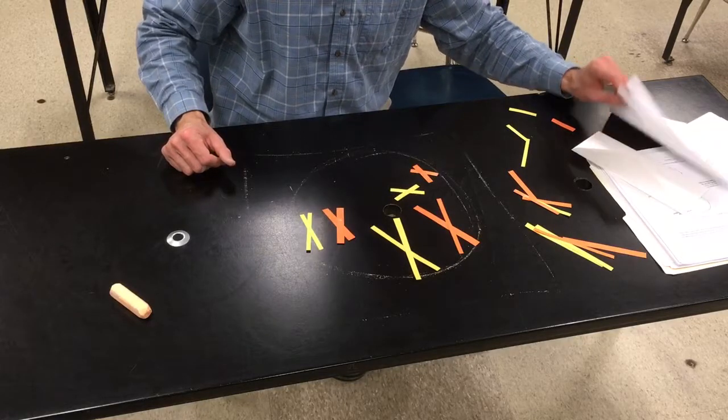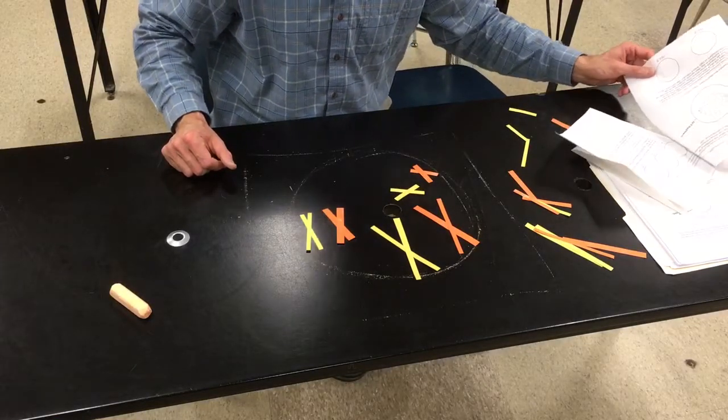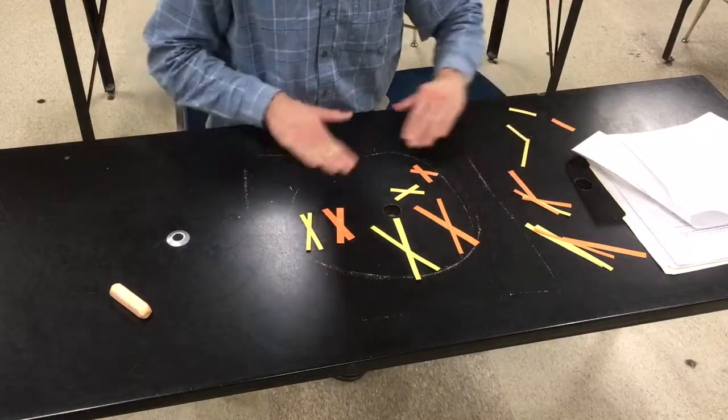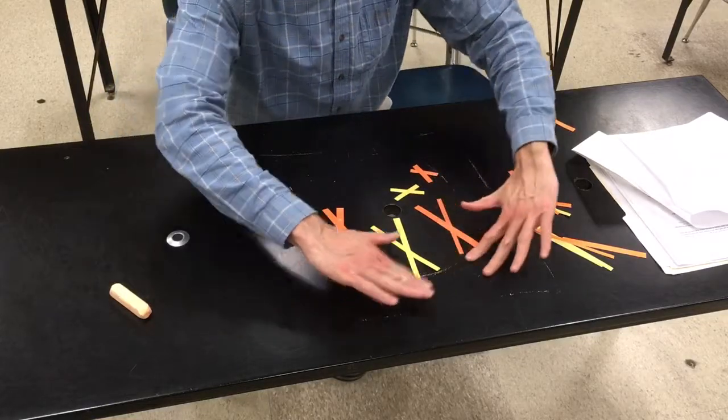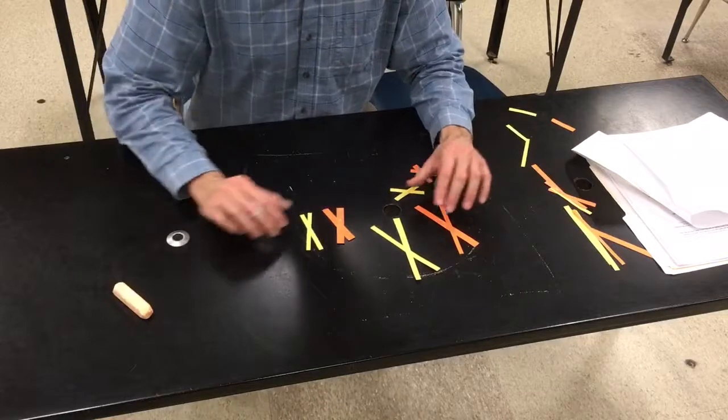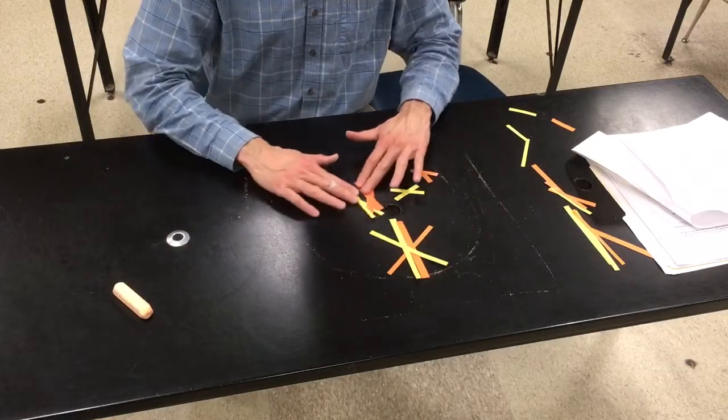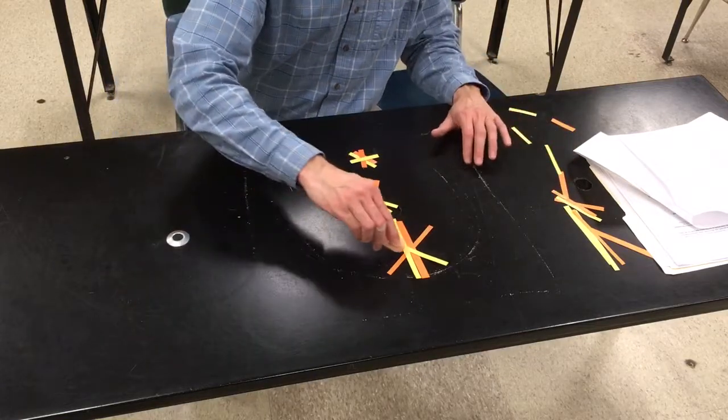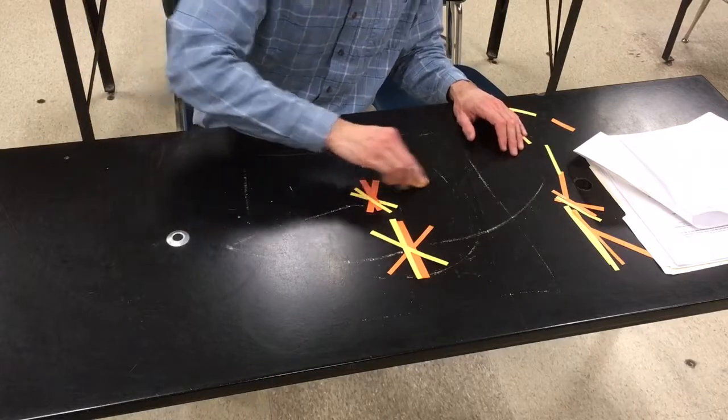The next thing is moving these on to metaphase. Your nucleus dissolves. You can erase that. Then spindles will form, and they'll move these - this is meiosis, remember - to the center of the cell to form three different tetrads. These are the spindles that are attaching to those and moving them.